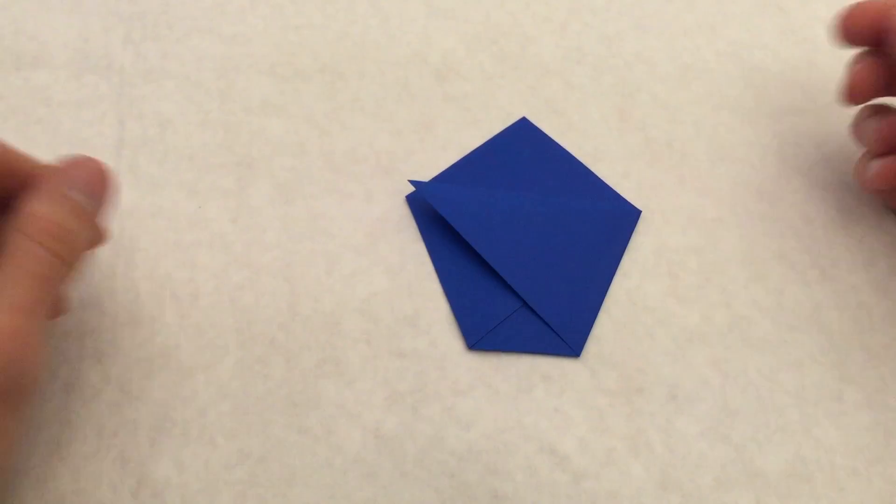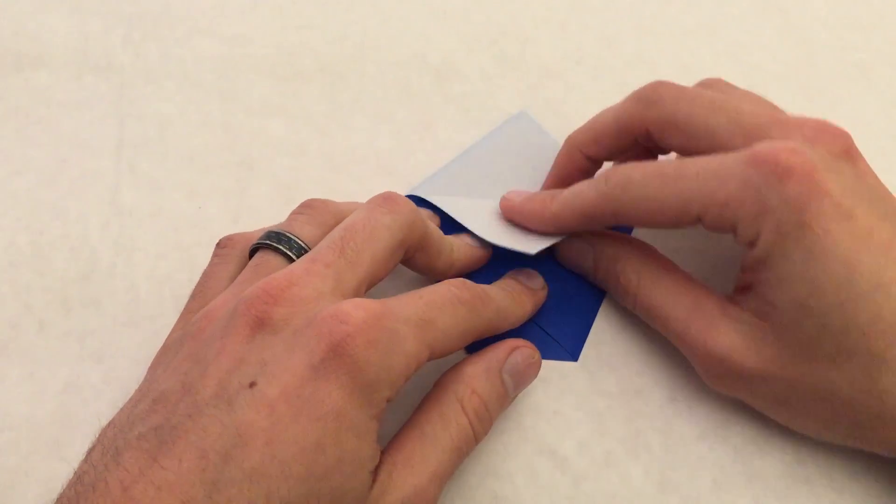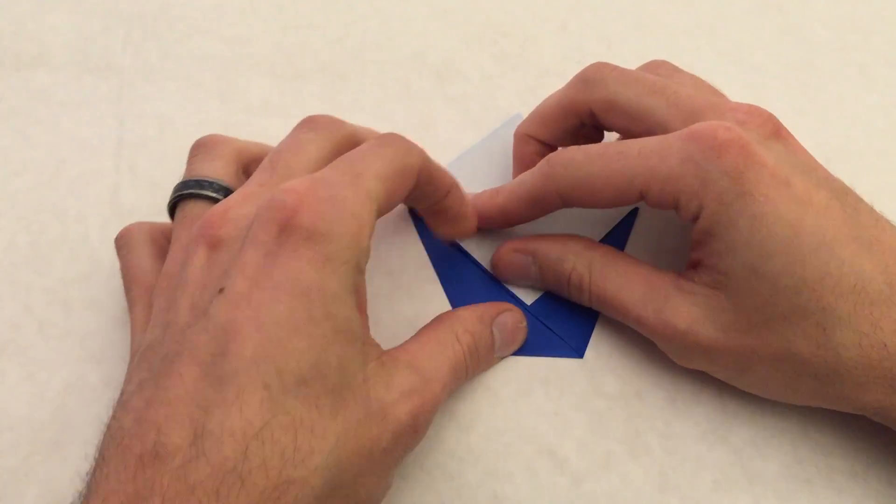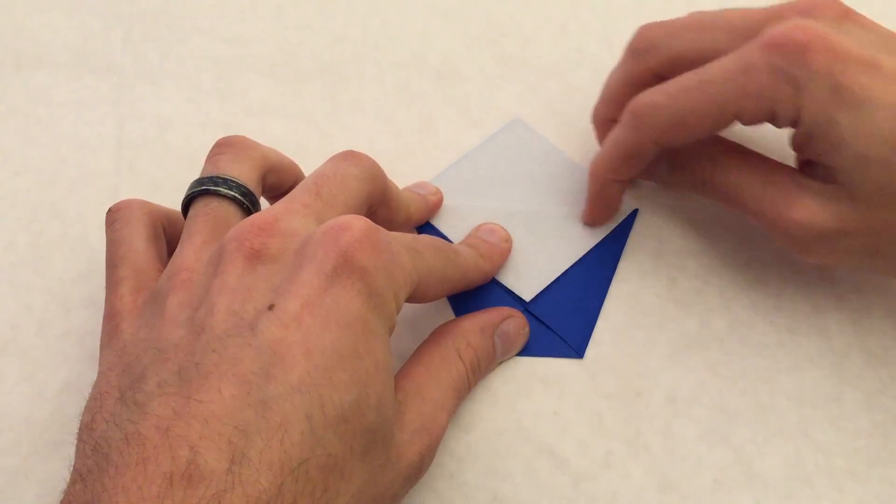Okay and now we're going to take the top point and fold it down along this line. We're making a valley fold like that.